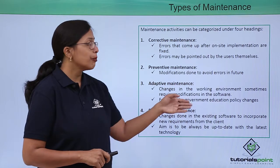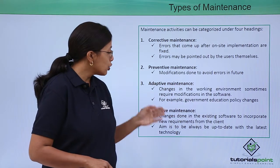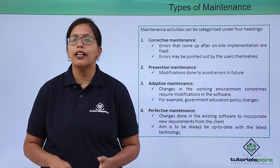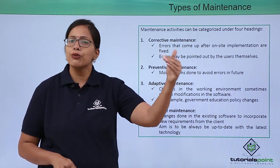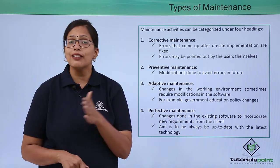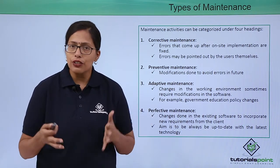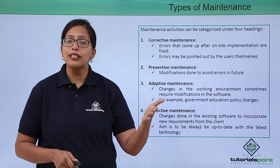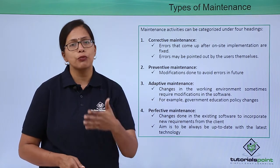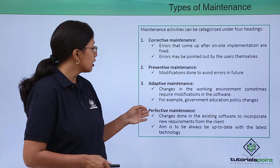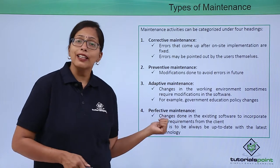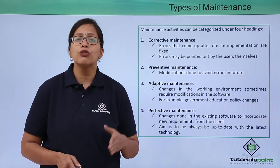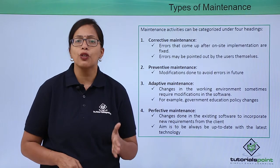In that case, some maintenance work has to be done so that the new environment can be maintained easily. Last but not the least, perfective maintenance refers to changes done in the existing software to incorporate new requirements of the client. At the initial stage the client may give ten requirements, but at a later stage they might realize one, two, or three more things need to be added. You are then supposed to enhance the software to include those requirements — that is perfective maintenance. It gets its name from the aim that the software should always be perfect and able to solve all the client's problems.